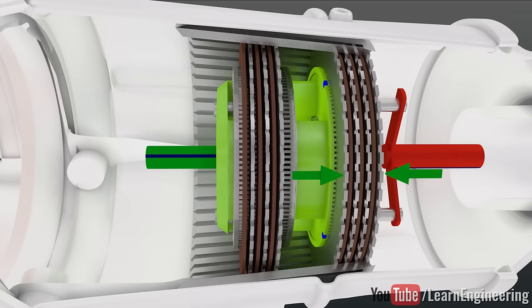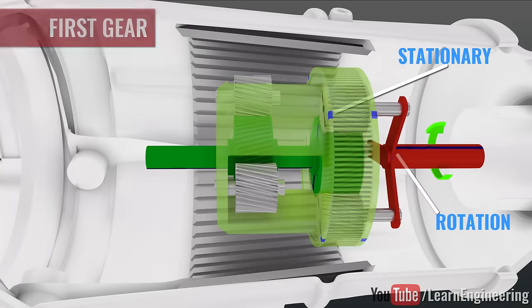When the first clutch is pressed, the green ring gear is stationary and we will get the first gear.